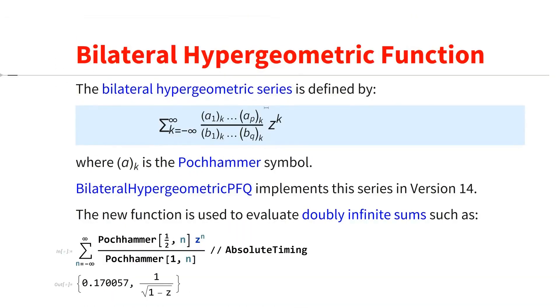So we have had the hypergeometric function forever. It's got factorials, et cetera. Then we had the Appell function in 13.3. They are bivariate, two variables. And now in version 14, we have the bilateral hypergeometric function, which is actually bilateral. It just means that the series goes from minus infinity to plus infinity.